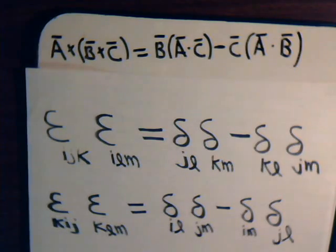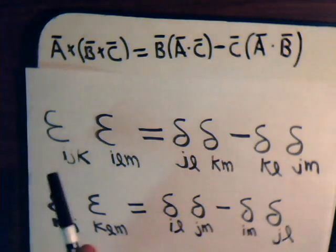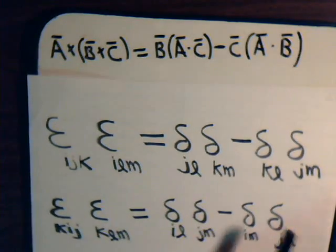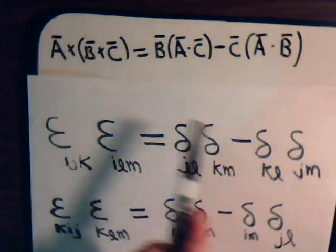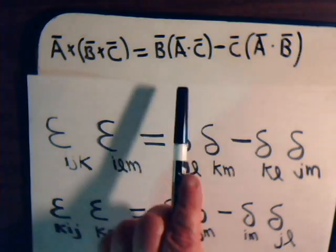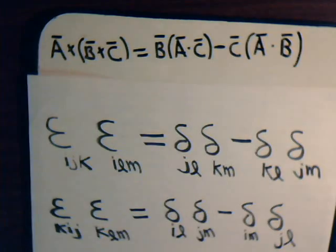In this video, we are going to use the epsilon Kronecker delta identity to prove this vector identity. A triple cross product equals the hopefully familiar back cab identity.